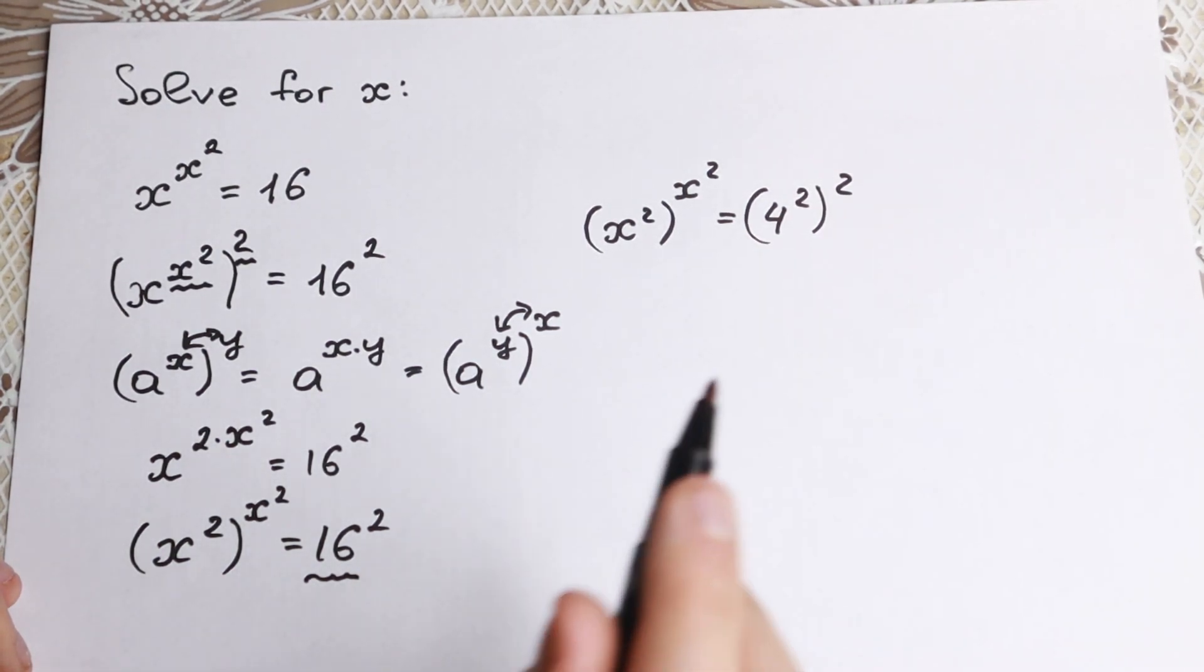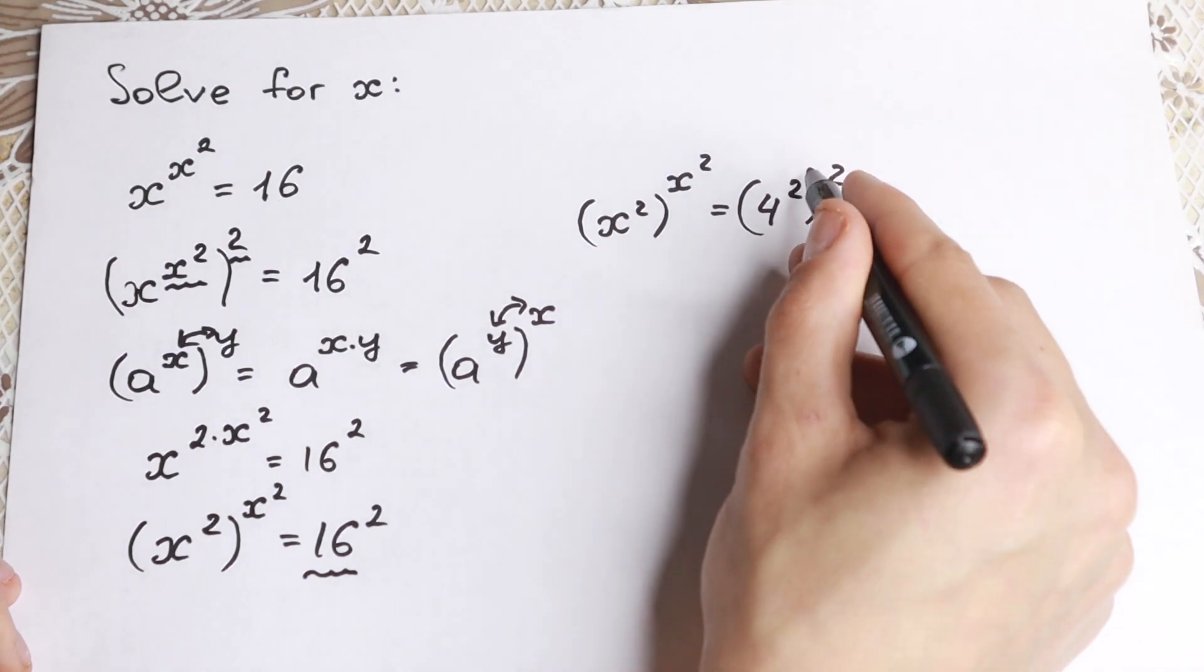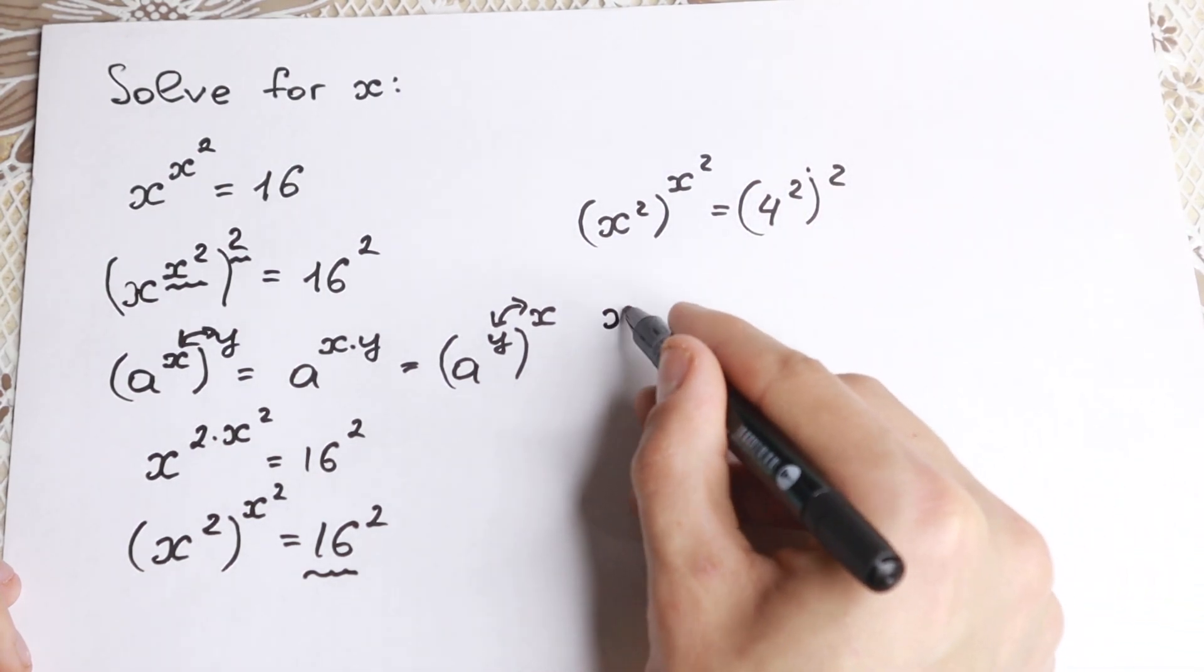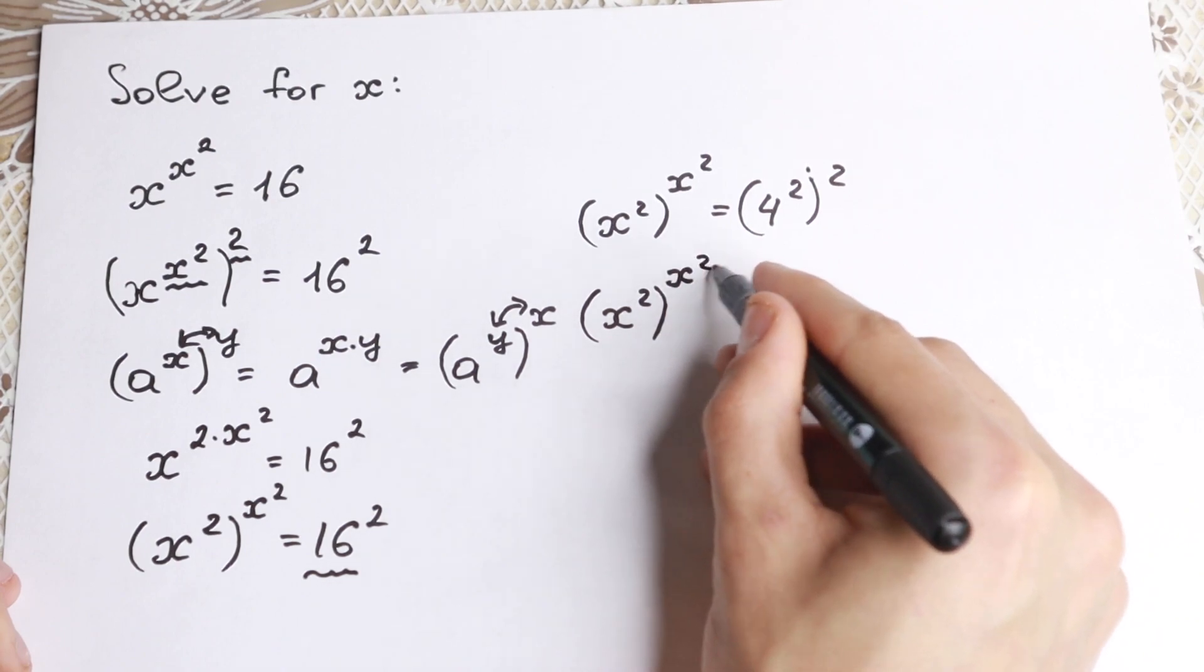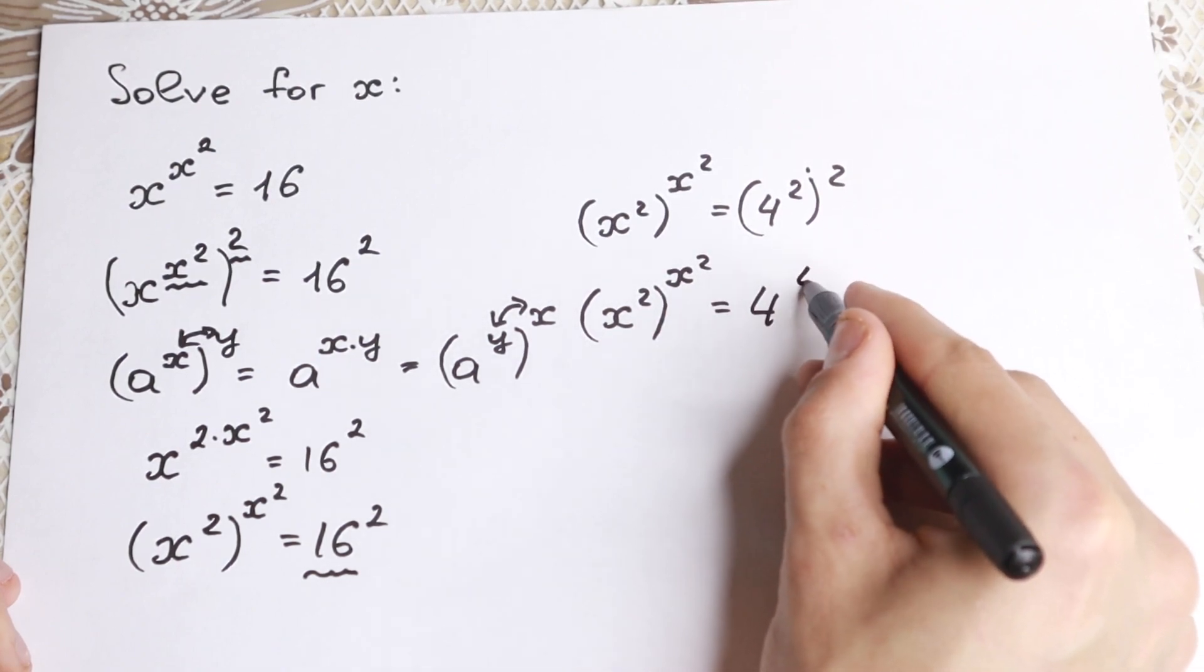We can see one really interesting moment. Because if we multiply both powers, we will have that x squared to the power x squared equal to 4 to the power 4.